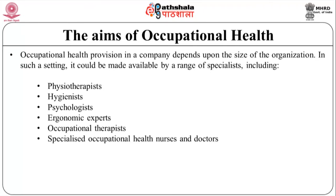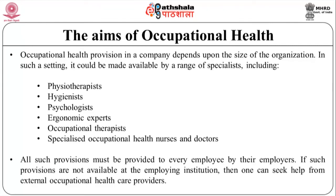Occupational health provision in a company depends upon the size of the organization. It could be made available by a range of specialists including physiotherapists, hygienists, psychologists, ergonomic experts, occupational therapists, and specialized occupational health nurses and doctors. All such provisions must be provided to each and every employee by their employers. If such provisions are not available at the employing institution, then one can seek help from external occupational health care providers.